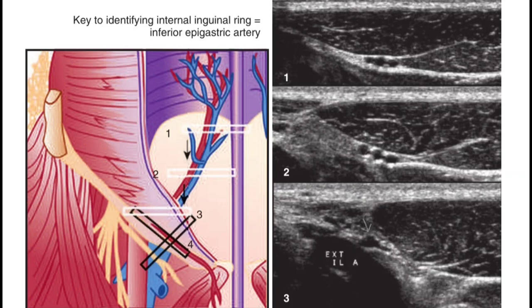Image number three was obtained at the level where the inferior epigastric veins — shown by arrowhead — lie at the edge of the rectus muscles. This is the level at which most spigelian hernias occur. Once the origin of the inferior epigastric artery is identified, the transducer should be rotated into planes that are parallel. Identify the internal inguinal ring and inferior epigastric artery and veins — these are the important landmarks for identification of direct, indirect, and spigelian hernias.